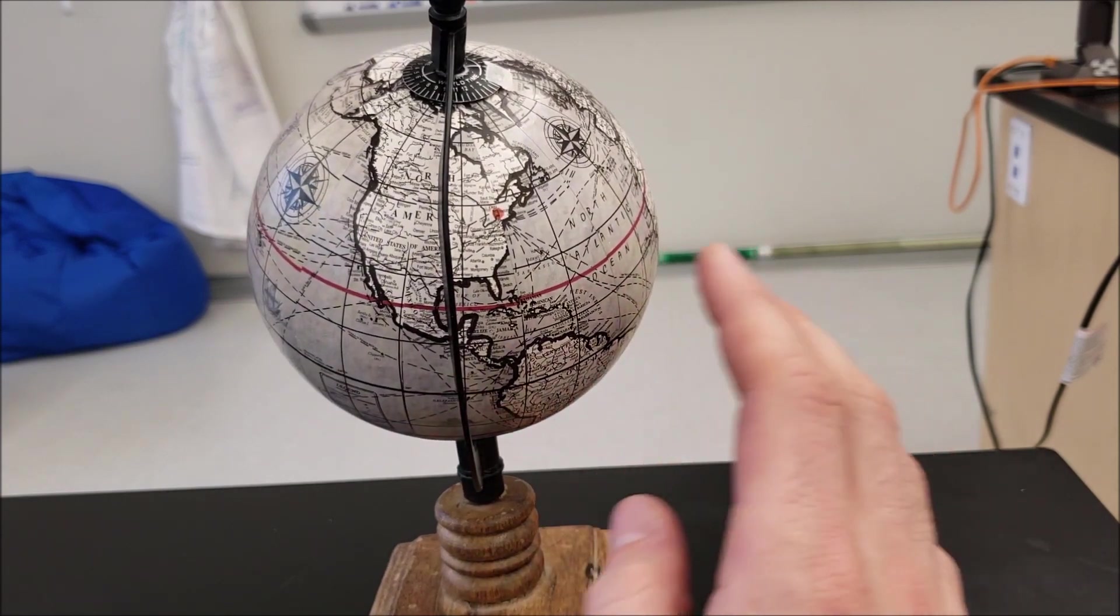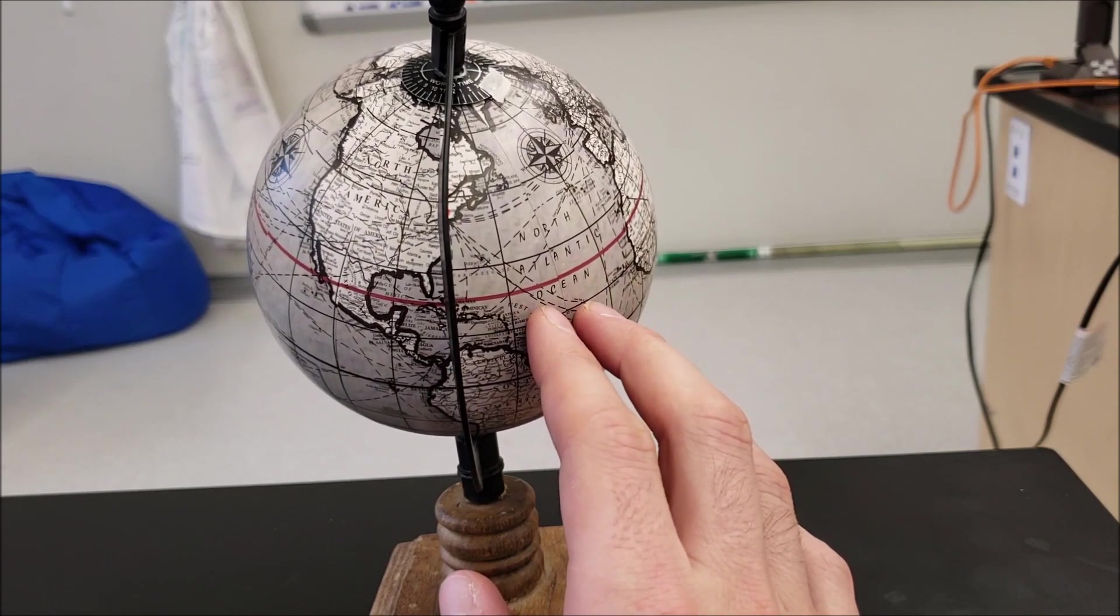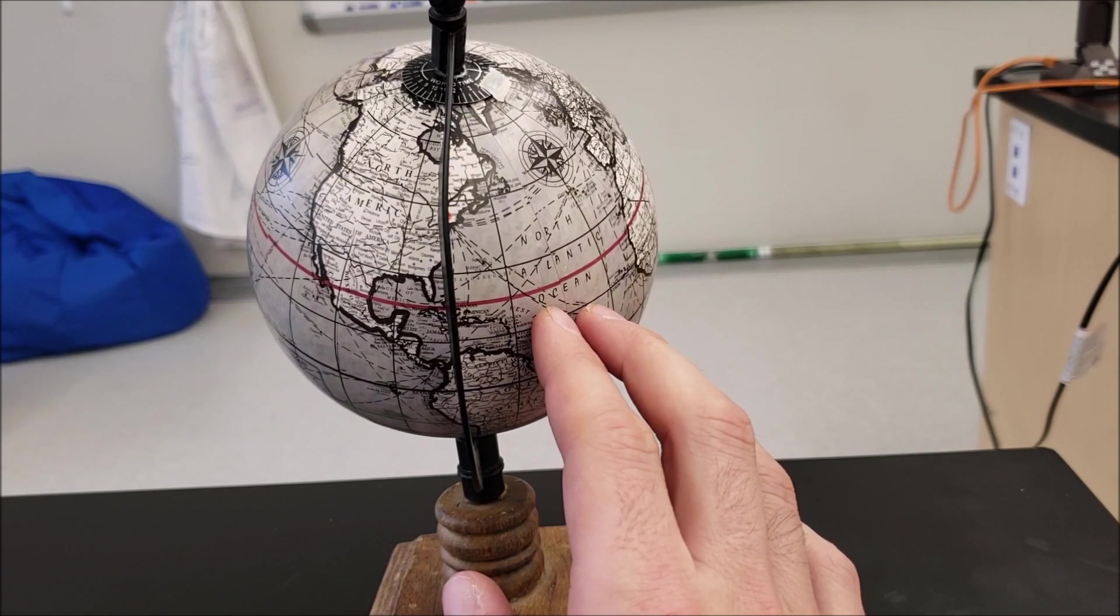And so since we've got it at the summer solstice position, I'm going to line it up with the axis bar that we have there. And we're just going to count.